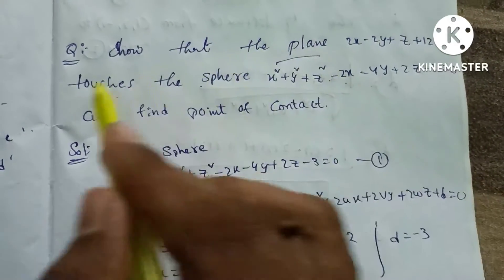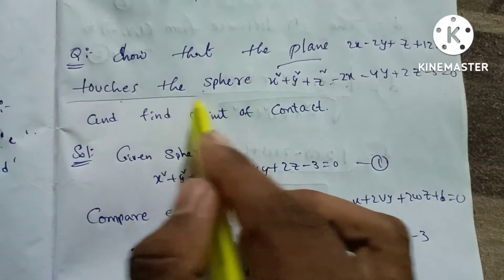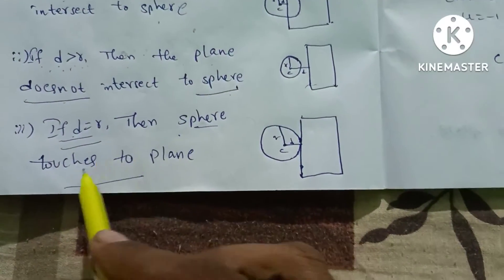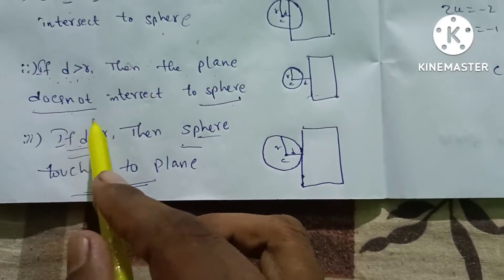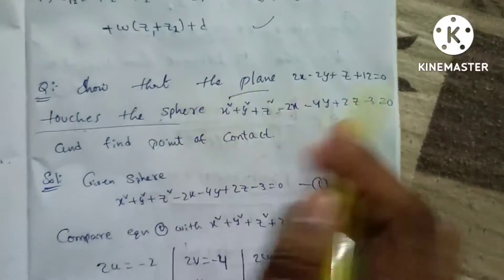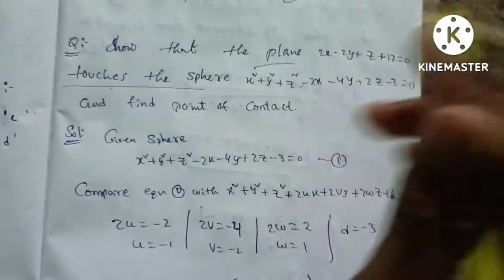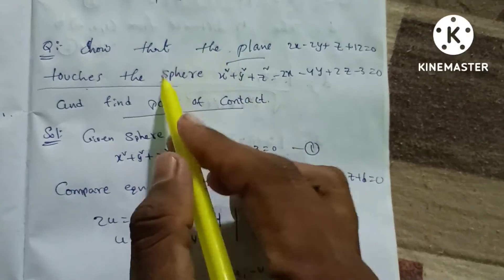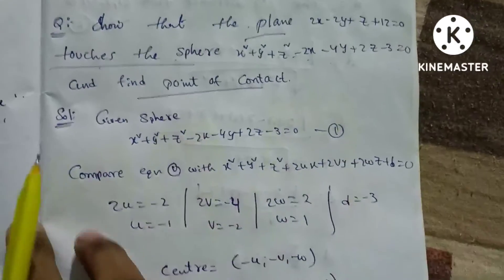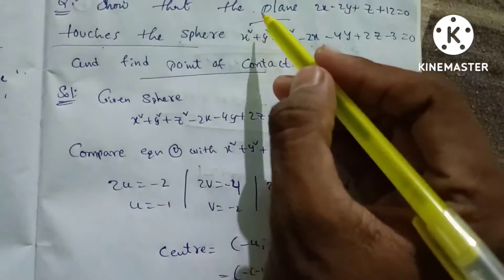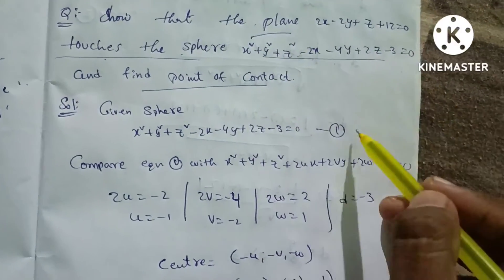The plane touches the sphere at the condition D equal to R. We will show the point of contact. Given the sphere equation, we will compare it with the general equation of the sphere.